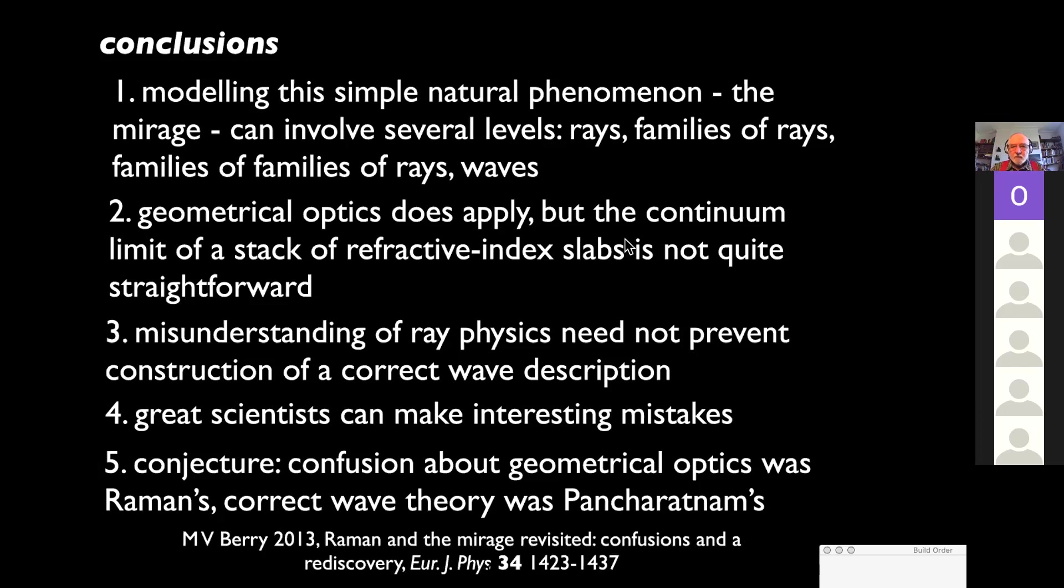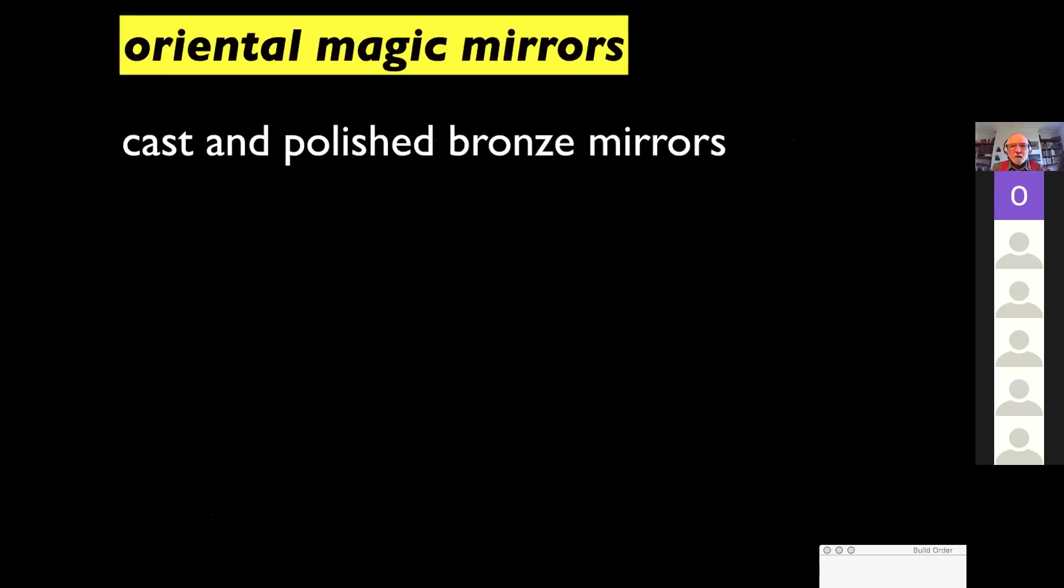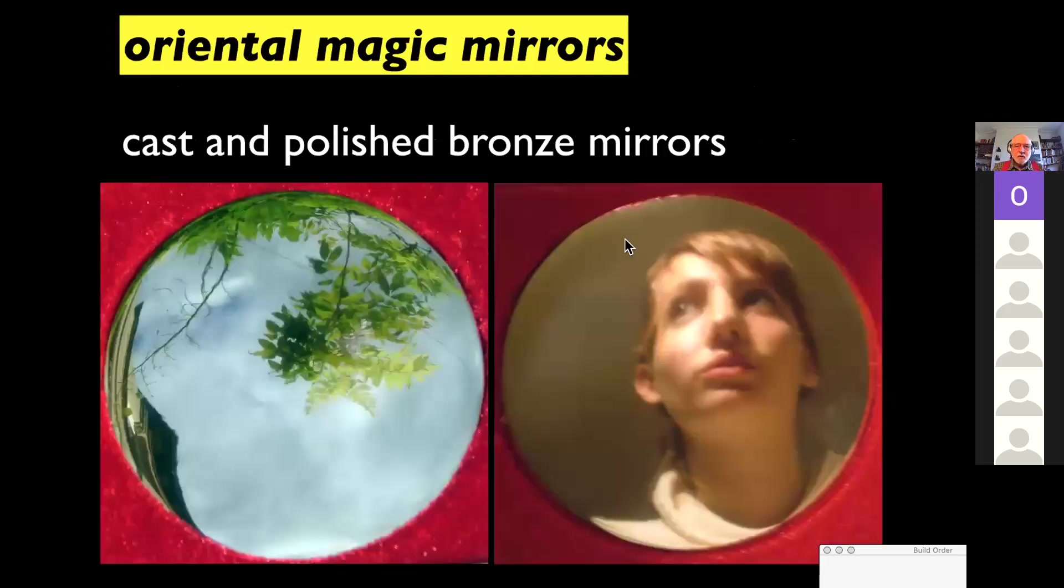Now I come to mirrors. There's a paper which I wrote about these matters. Change the subject. Still optics, though. Oriental magic mirrors are cast bronze mirrors, polished. They were made in the Han Dynasty several thousand years ago in China. And also they were made subsequently in Japan.